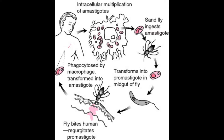Vice versa, humans can also infect the sandfly, in which the cycle acts in reverse. The sandfly can acquire the amastigotes from the human during a blood meal, which then transform into promastigotes in its digestive tract over a period of 72 hours. These promastigotes then multiply and migrate from the mid-gut to the pharynx and buccal cavity of the fly within six to nine days.